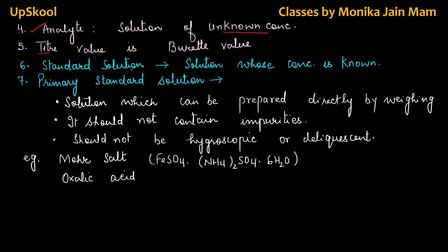Now we commonly use the term standard solution. Now what is standard solution? Solution whose concentration is known, whose strength is known. Now there are two types, one is primary standard solution, other one is secondary standard solution. Primary standard solution is that solution which can be prepared directly by weighing, simply you weigh the sample, dissolve and the solution is ready. But in this, some conditions should be there. It should not contain impurities, means if they are present, they should be negligible. It should not be hygroscopic or deliquescent, means it should not absorb moisture.